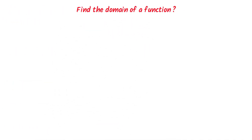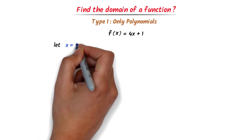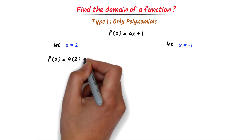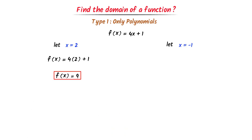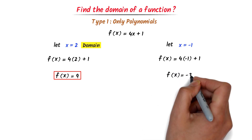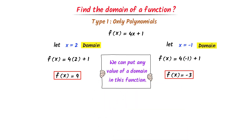Now let me teach you how we can find the domain of any function. Consider the first type: questions with only polynomials. f(x) = 4x + 1. Let me take two values of x: x = 2 and x = -1. Plugging in x = 2, I write 4 × 2 + 1 = 9. Hence, x = 2 is the domain. Plugging in x = -1, I write 4 × (-1) + 1 = -3. Hence, x = -1 is also the domain, because the function is defined at both values.